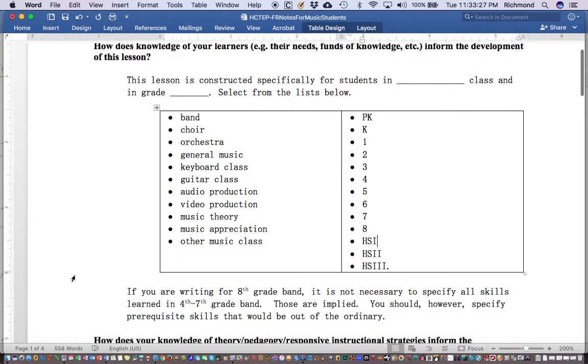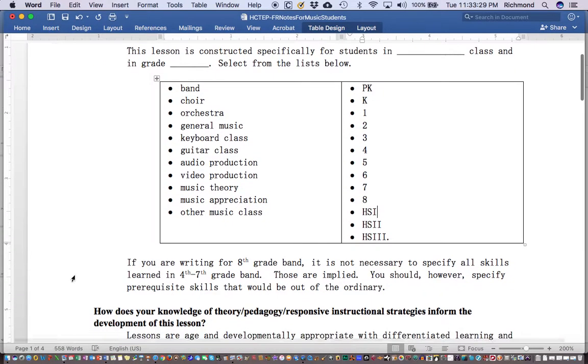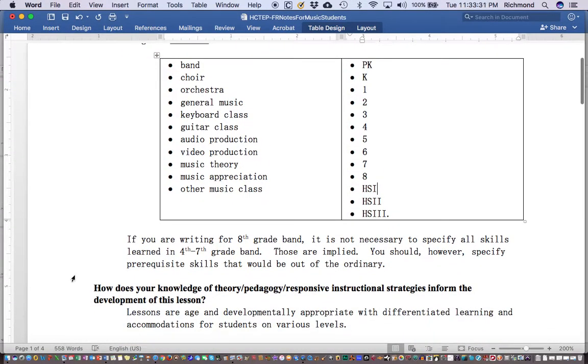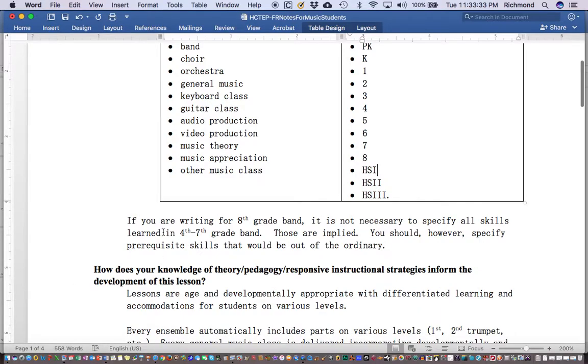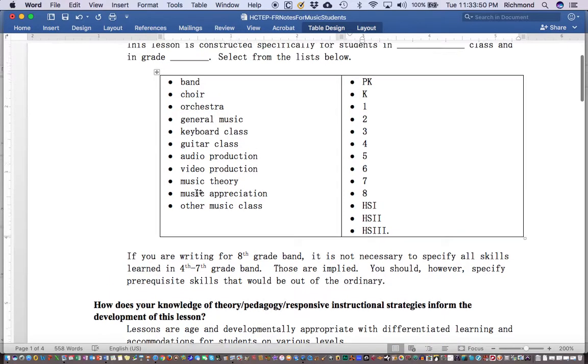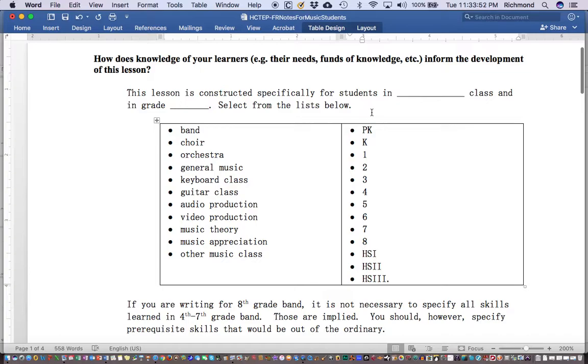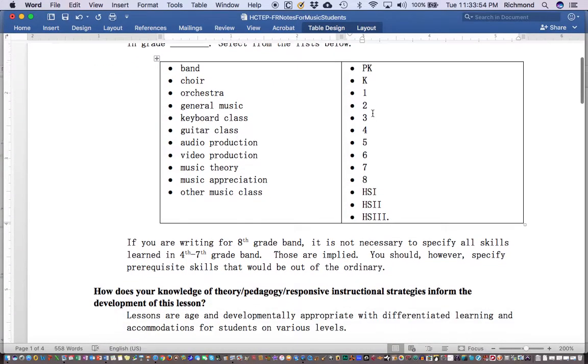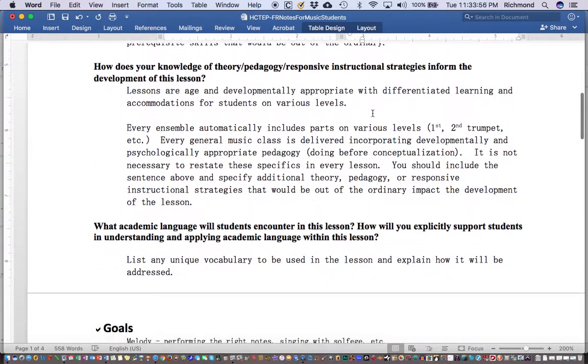This should generally cover about 90% of everything that needs to be covered for question number one. If you're writing for an eighth grade band, you do not have to specify all the skills that were learned in fourth through seventh grade band. These are implied. You should, however, specify any prerequisite skills that would be out of the ordinary.